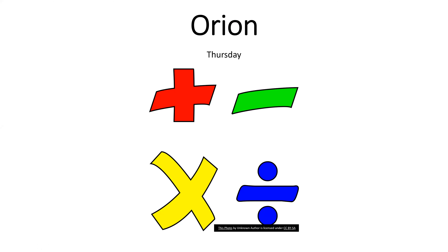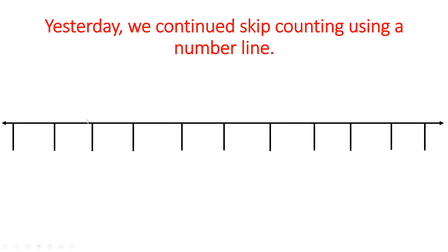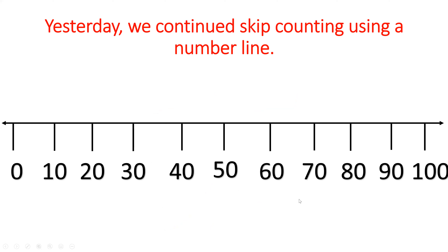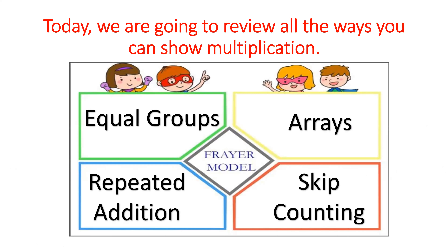Hey Orion, happy Thursday. Yesterday we continued skip counting using our number line, working on skip counting by 10. Our number line always begins with zero: 10, 20, 30, 40, 50, 60, 70, 80, 90, 100. Today we are going to review all the ways you can show multiplication using our model — equal groups, arrays, repeated addition, and skip counting.